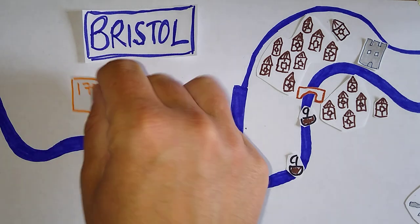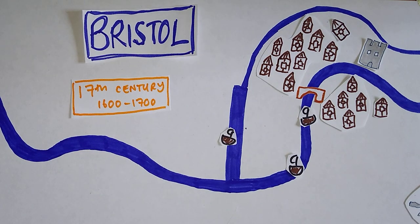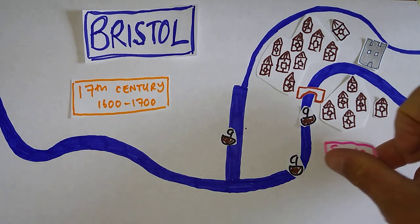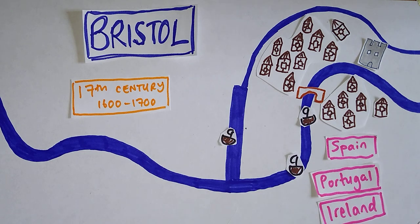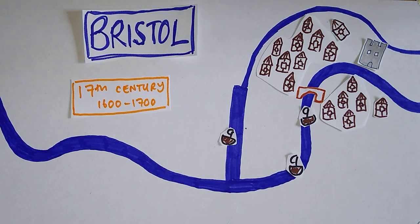This takes us neatly into the 17th century. And the 17th century is definitely a period of change in Bristol. Although Bristol is still really importantly trading with Spain and Portugal and Ireland still, things begin to change in the 1640s. And in the 1640s in England, there is a civil war. That civil war means that the castle in Bristol is burned to the ground and the town expands as a result.